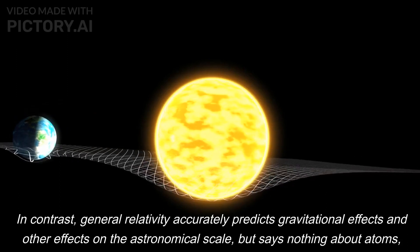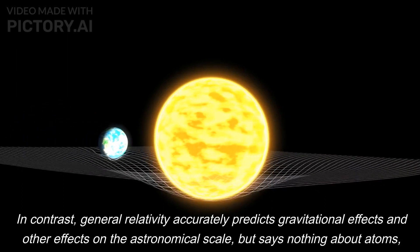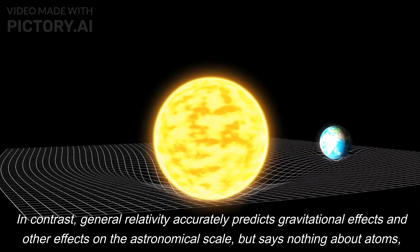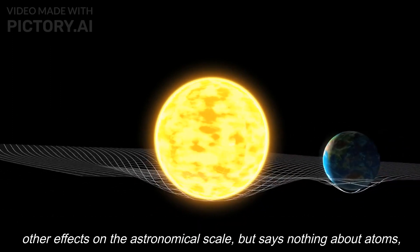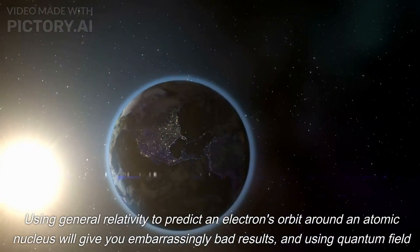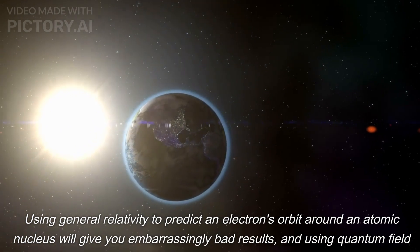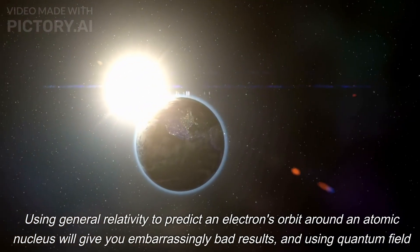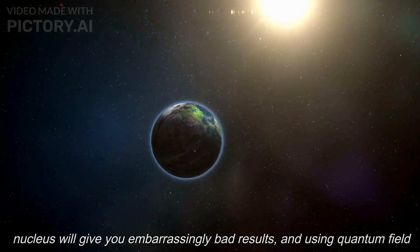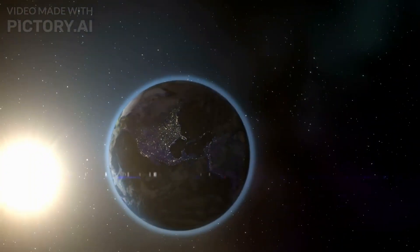In contrast, general relativity accurately predicts gravitational effects and other effects on the astronomical scale, but says nothing about atoms, electromagnetism, or anything on the small scale. Using general relativity to predict an electron's orbit around an atomic nucleus will give you embarrassingly bad results, and using quantum field theory to predict Earth's orbit around the Sun will likewise give you bad results.